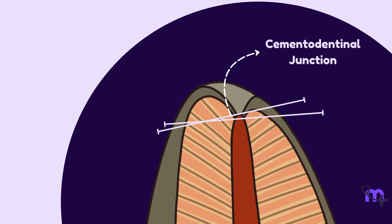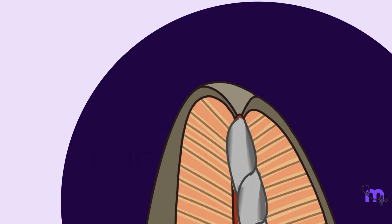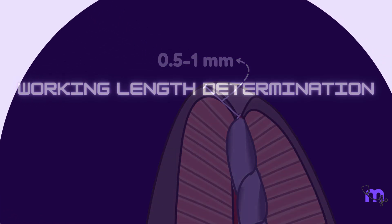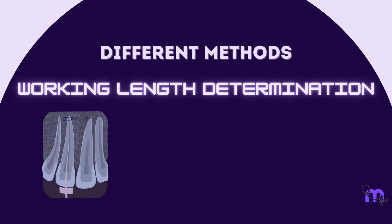The cemento-dentinal junction (CDJ) does not commonly coincide with the apical constriction and is short of it. Thus, it is advised to terminate the instrumentation and obturation within 0.5 to 1 millimeter short of the radiographic apex.